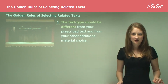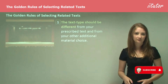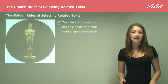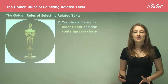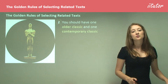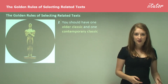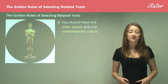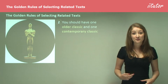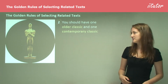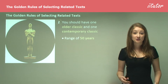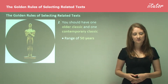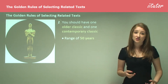The second rule is that you should have one older classic and also a contemporary classic. An older classic is a very old-fashioned text which is tried and proven to be a really great piece of literature, whereas a contemporary classic is something in the last 50 years or so which has also been proven to be an excellent text of high quality. You should have a range of at least 50 years to ensure these high quality texts also have grounds you can contrast them for.